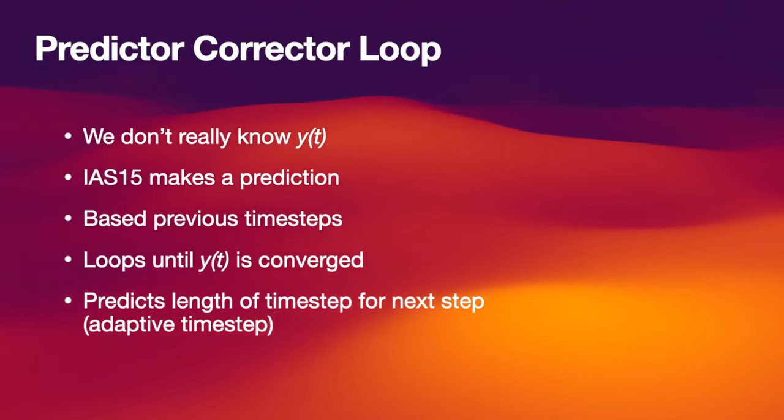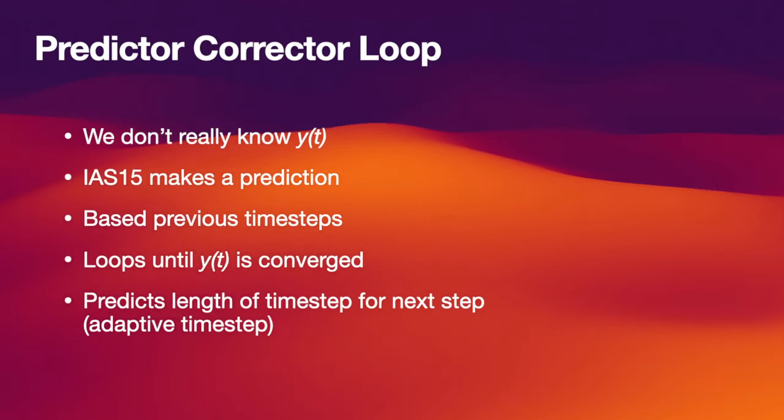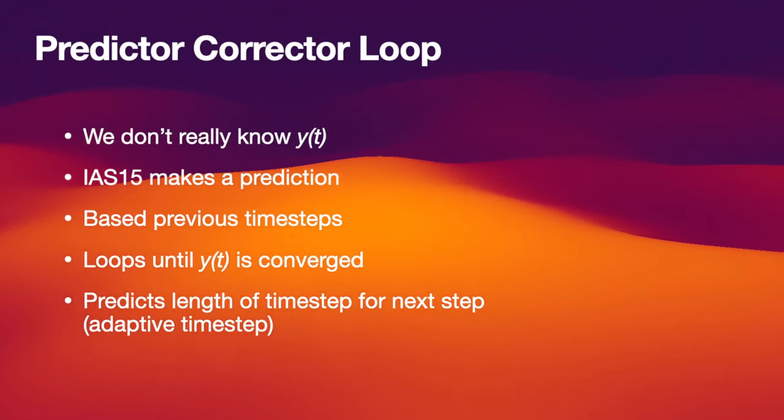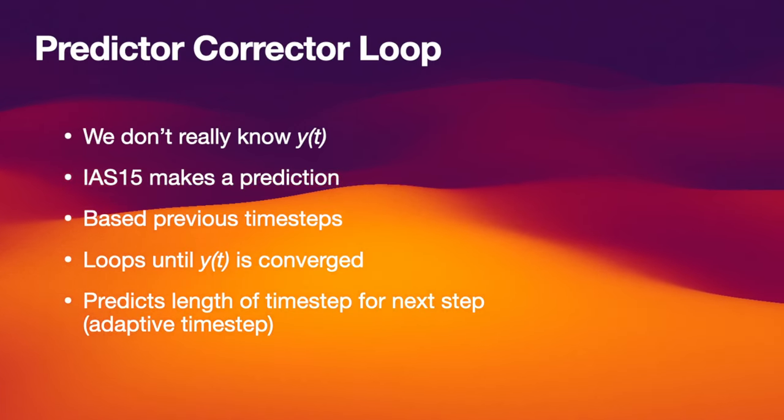This effectively makes IAS15 a multi-step method. However, if there are no previous time steps, for example if you just start an integration, this predictor-corrector loop will still converge. It might just take a few more iterations. So technically it is a multi-step method, but in practice you can get away without it. It just makes the code a little slower.